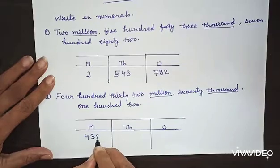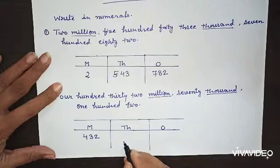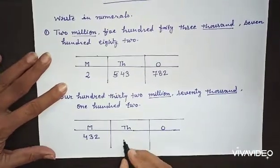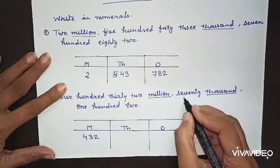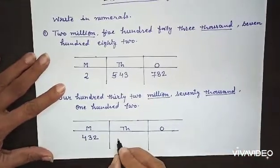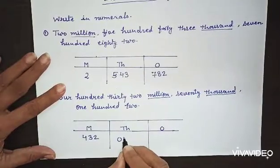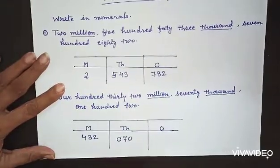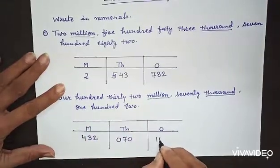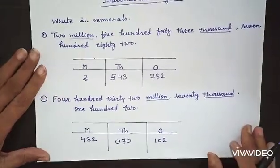Now seventy thousand. As we know in international system, all periods consist of three places, but here we have only seventy thousand. There is no hundred place, so in hundred place we will write zero and seventy. And last, one hundred and two. So one hundred and two. Clear? Thank you.